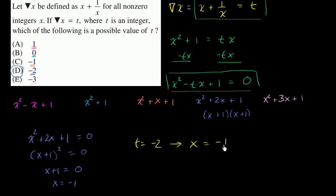Which means that x would be equal to negative one. So when t is equal to negative two, that means that x is equal to negative one, and negative one is a non-zero integer.